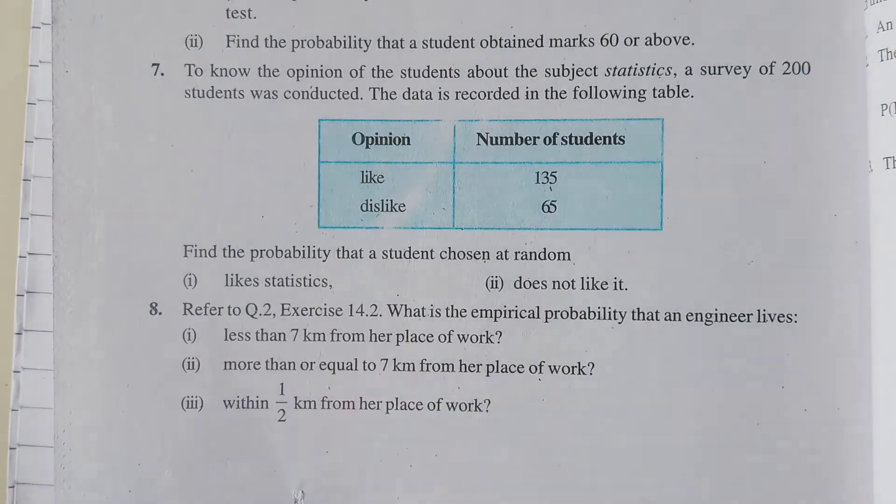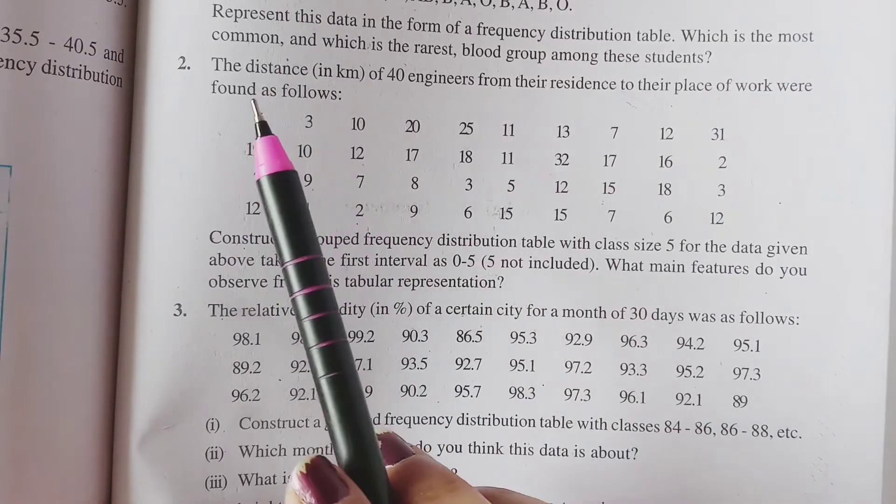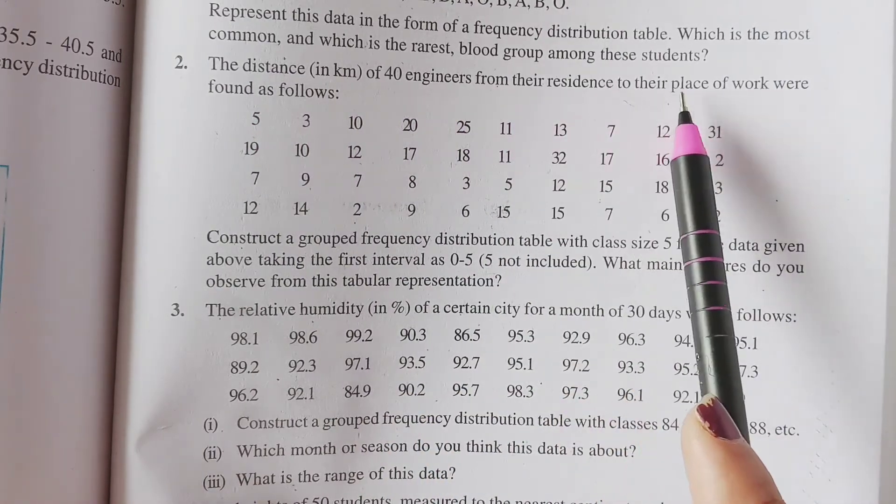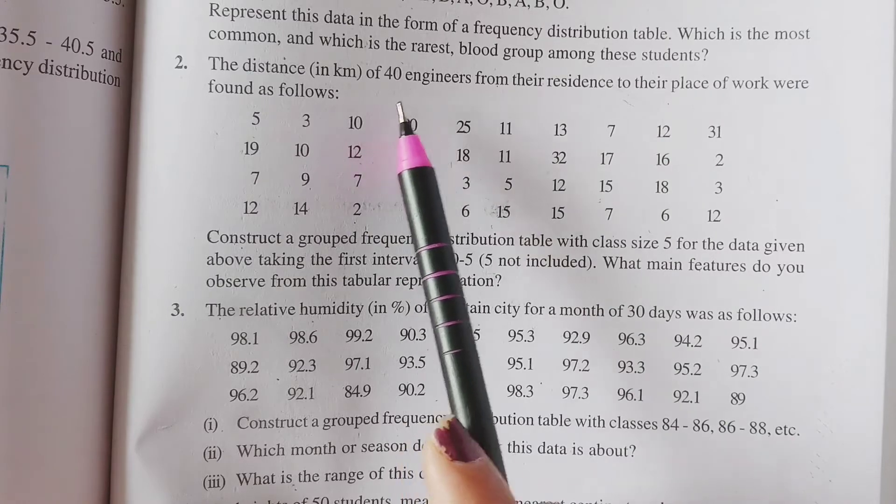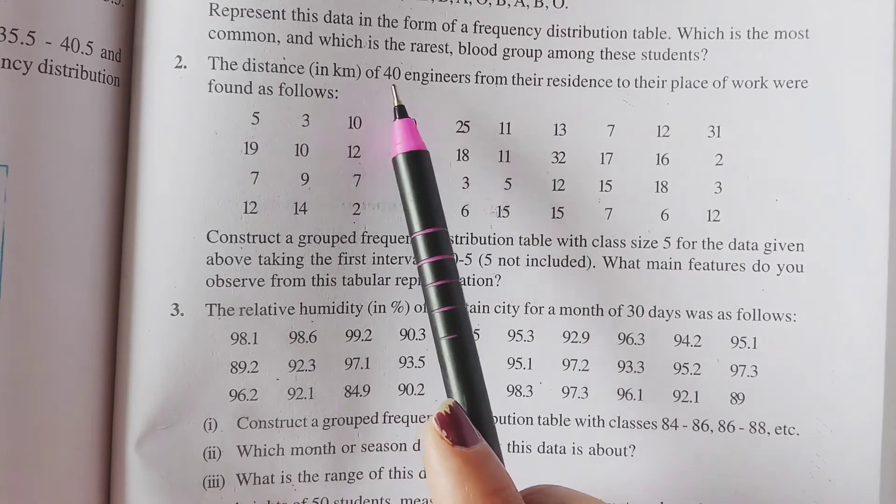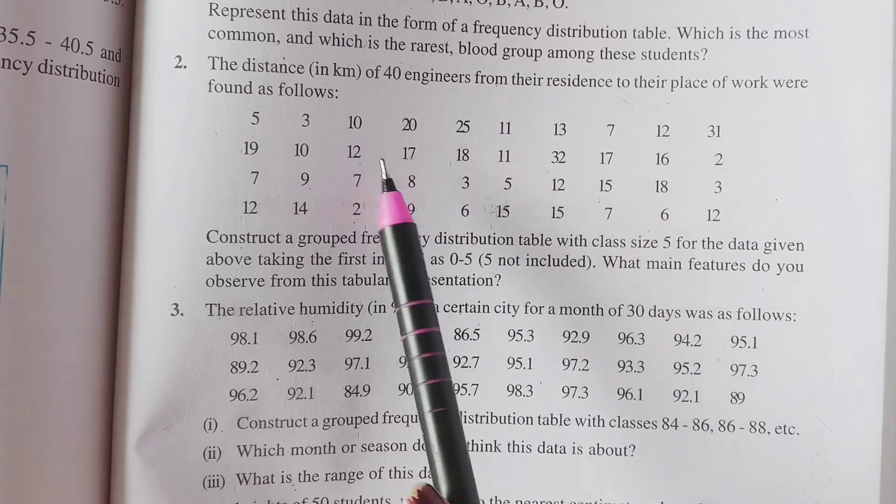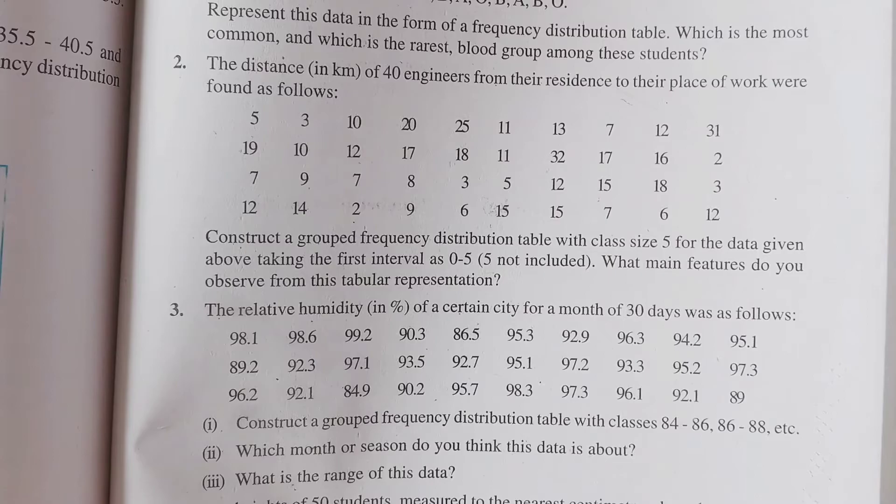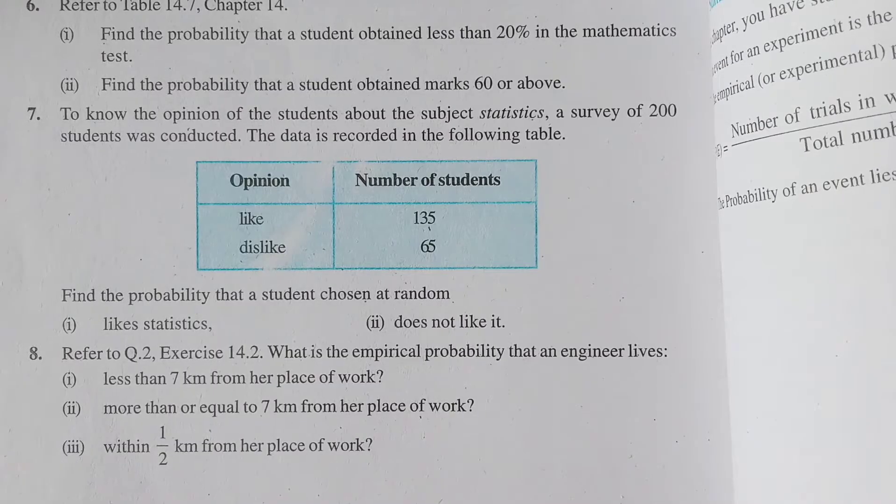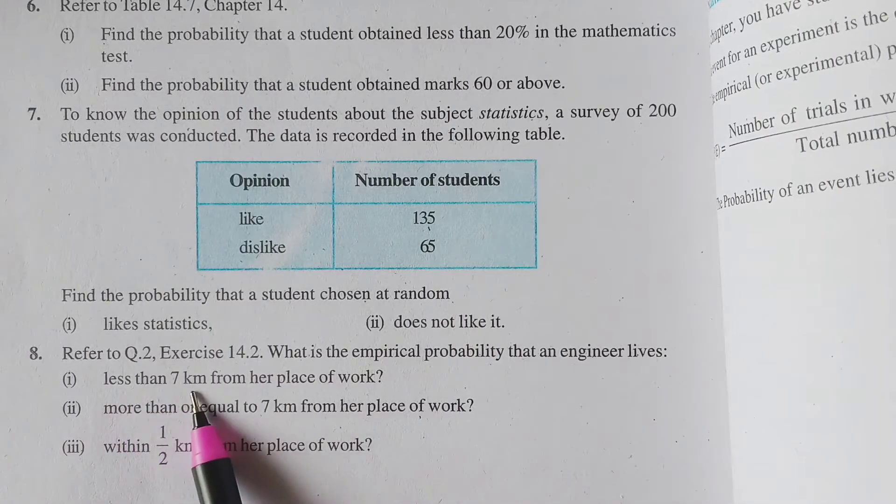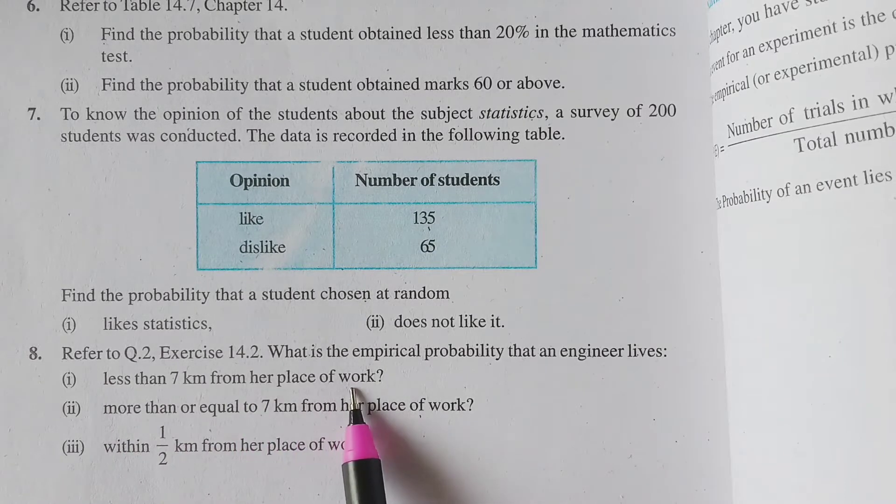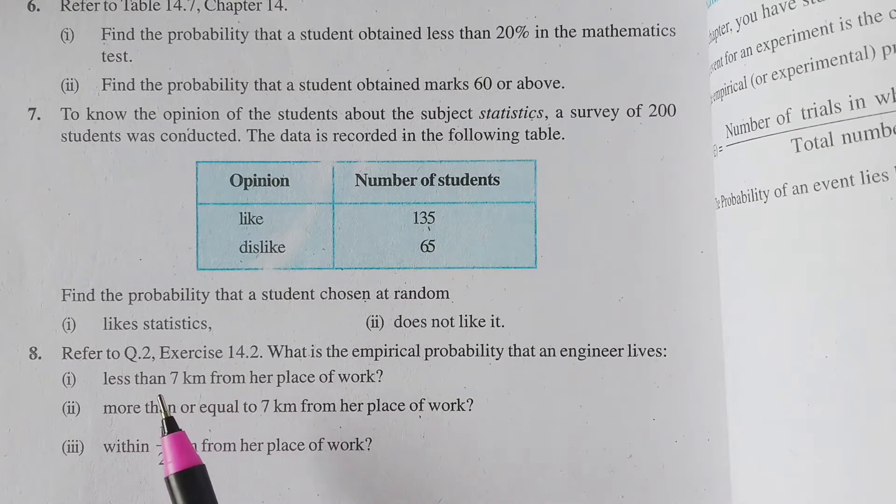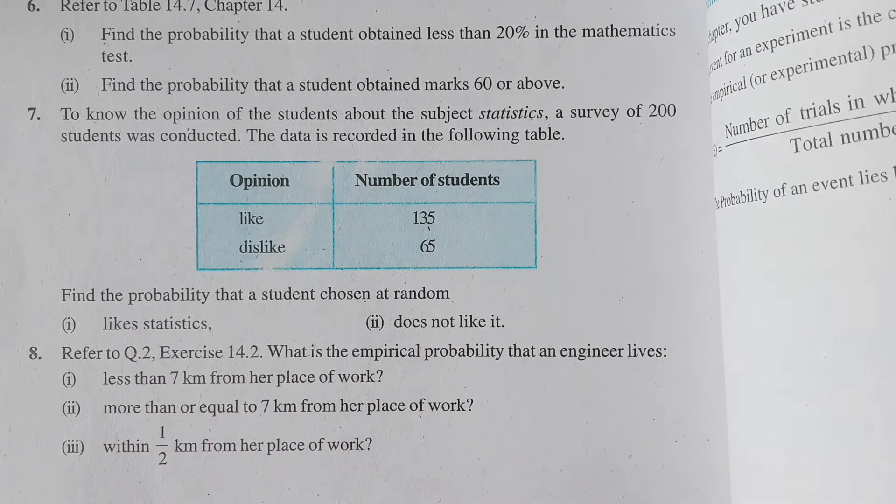So let's see. The distance in km of 40 engineers from their residence to their place of work were found as follows. Yani ki 40 engineers hai, jis ke apne ghar se apne work place ka jo distance hai, woh yaha pe aapko given. So first probability jo hai, woh humme kya find karna hai?